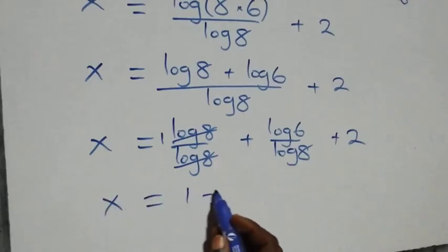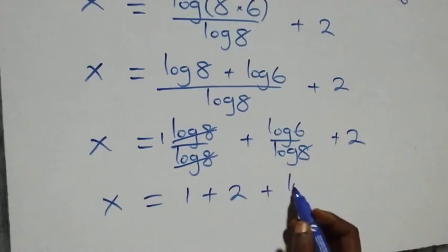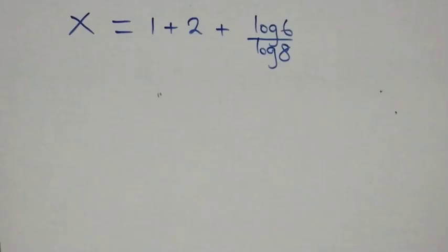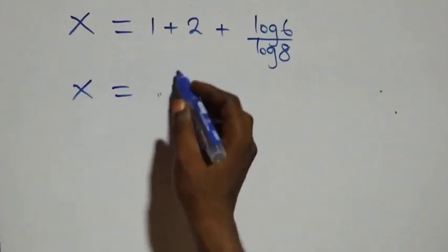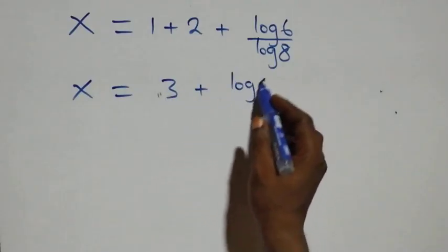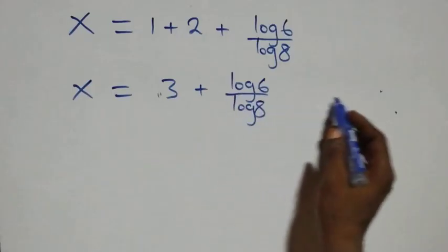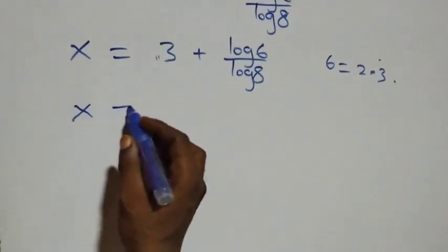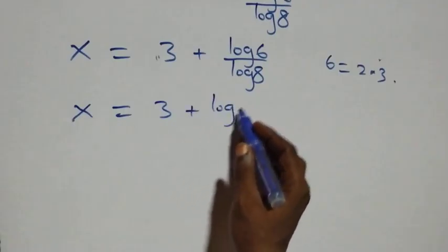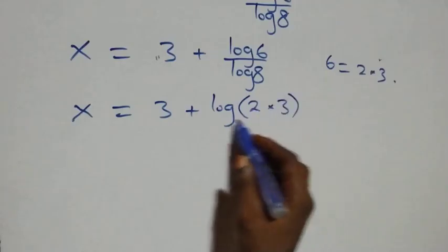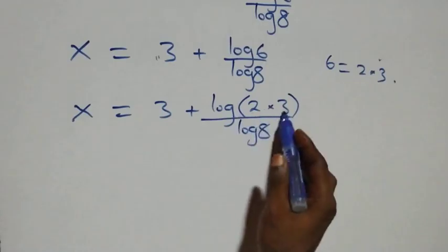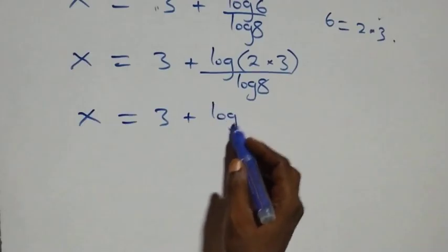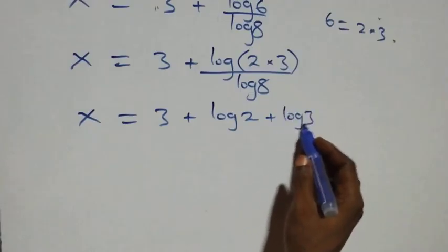So x equals one plus two plus log six over log eight, which gives x equals three plus log six over log eight. We can write six as two times three, so log six equals log two plus log three. This gives x equals three plus log two plus log three, all over log eight.